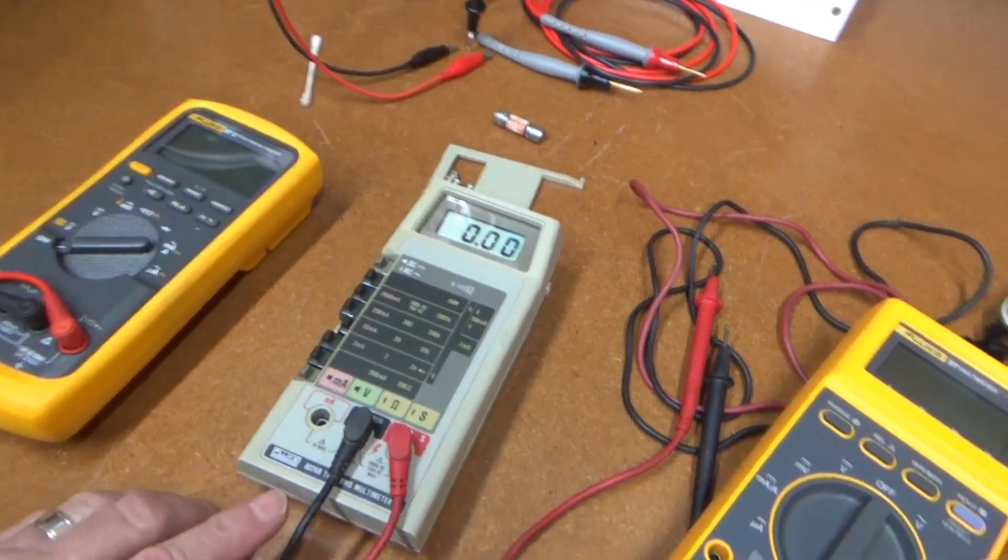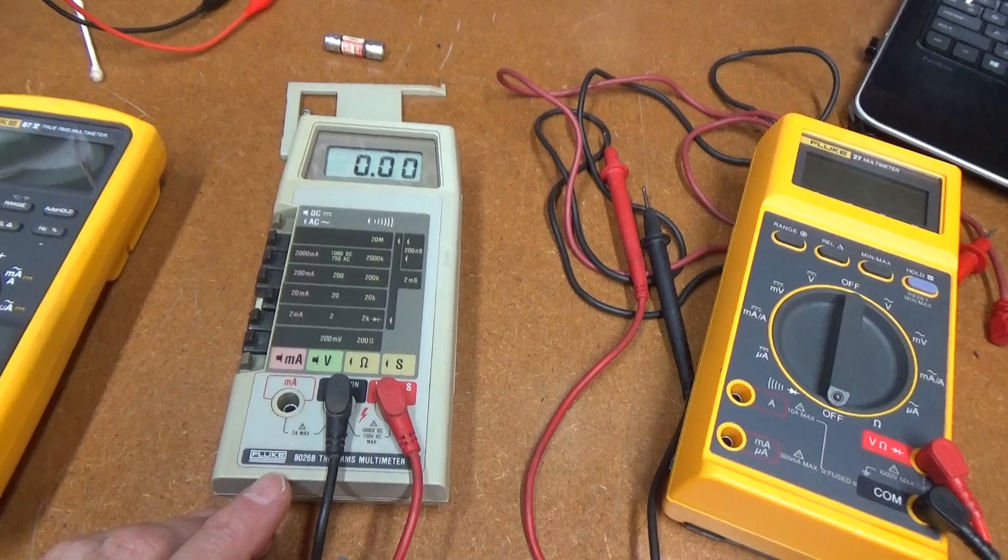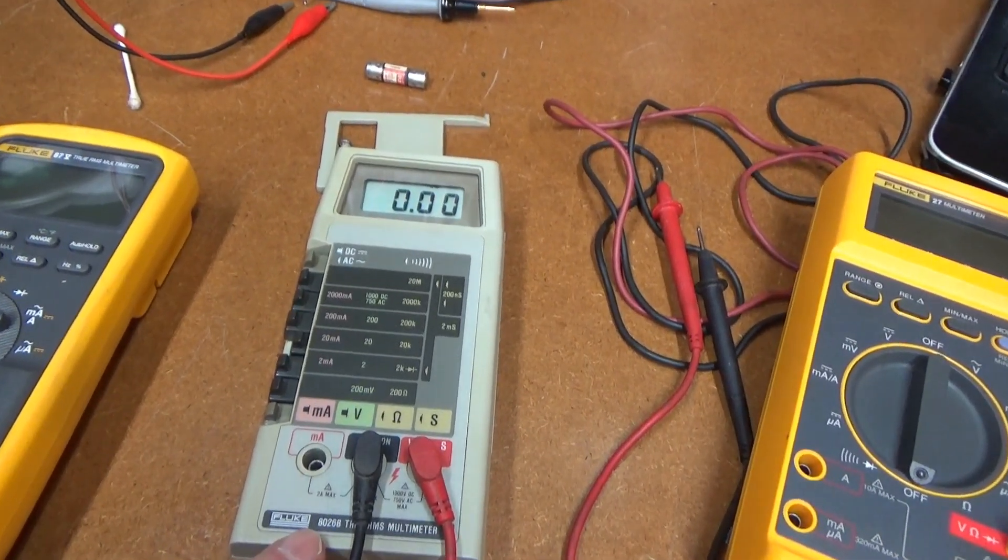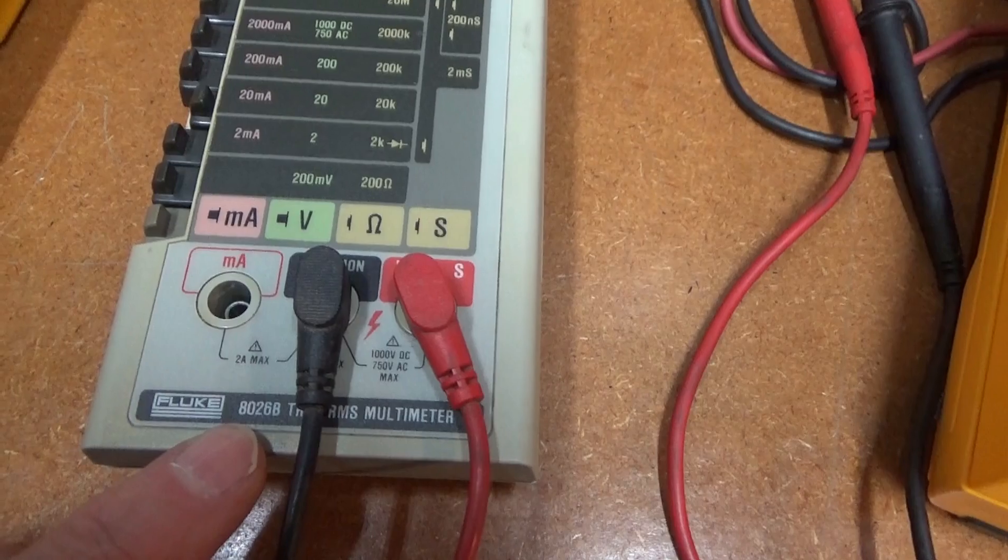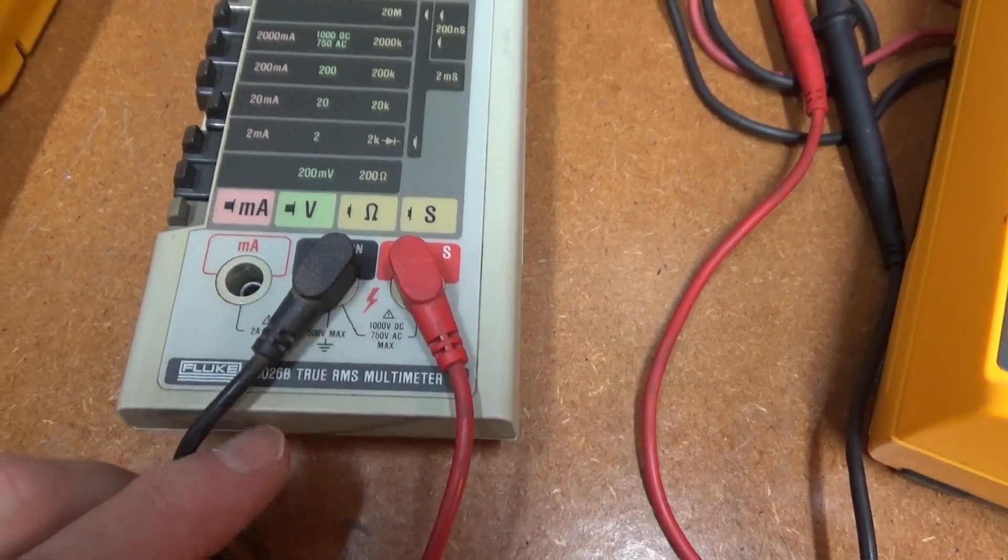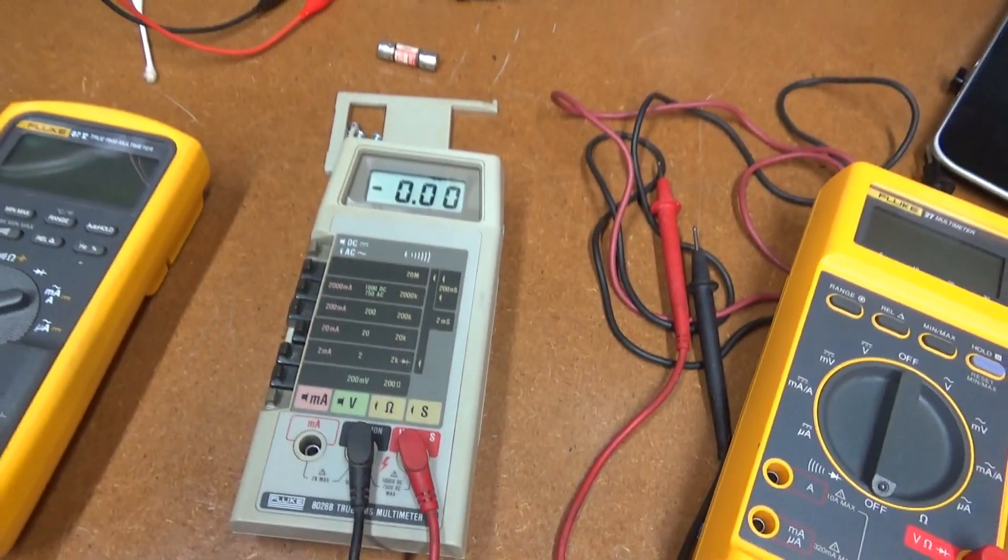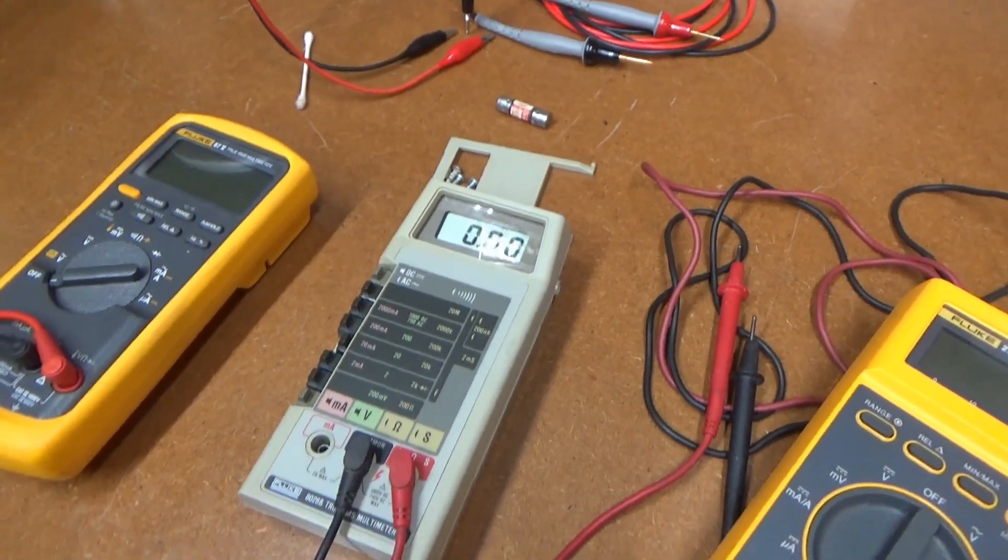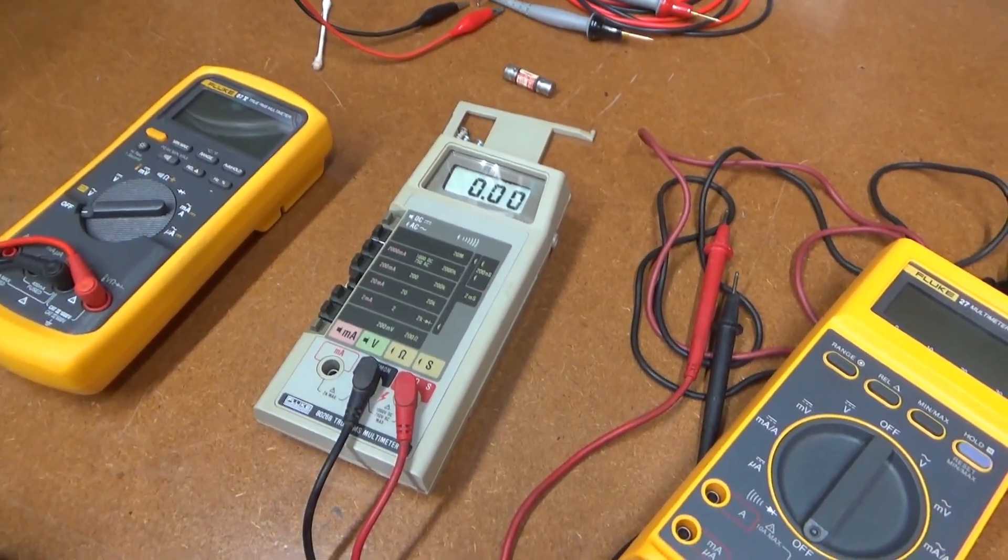So that's it for the review, cleanup, and test of the Fluke 8026B True RMS Multimeter from the late 80s. Thank you very much for watching, and I'll see you in the next video.